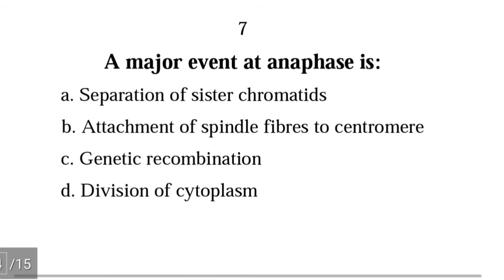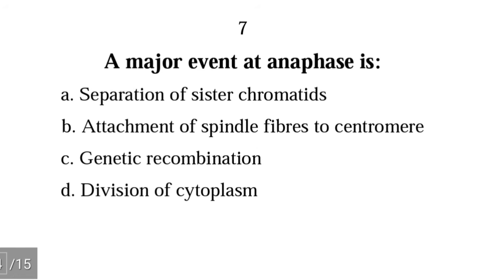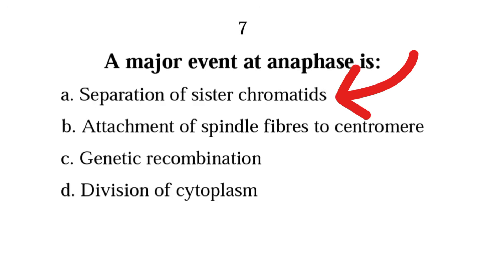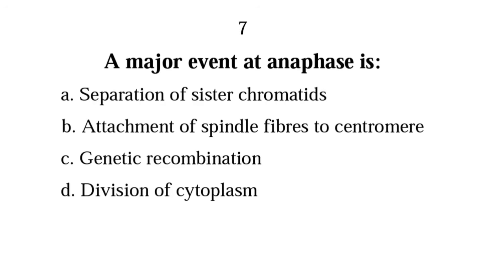Question 7: A major event at anaphase is A) separation of sister chromatids, B) attachment of spindle fibers to centromere, C) genetic recombination, D) division of cytoplasm. The correct answer is A) separation of sister chromatids. Sister chromatids separate during anaphase to become individual chromosomes.